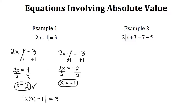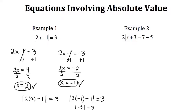Now we do the same thing for our second x value. We plug in negative 1: the absolute value of 2 times negative 1 minus 1 should equal 3. So 2 times negative 1 is negative 2, and negative 2 minus 1 is negative 3. The absolute value of negative 3 is 3 — so that checks as well. We know both solutions are good.